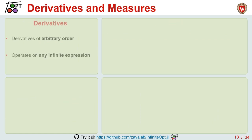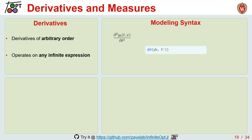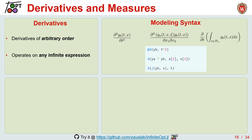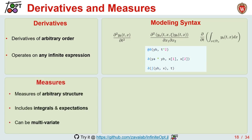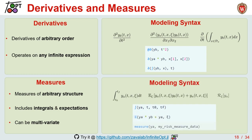For derivative operators, we support derivatives of arbitrary orders that can act on arbitrary infinite variables or expressions — for example, the second partial derivative of an infinite variable, or more complex partial derivative expressions, or even taking the derivative with respect to a measured function. For measure operators, we support measures of arbitrary structures and natively support integrals and expectations, even multivariate ones. We can use the integral function or expectation, and support arbitrary functions using our extendable measure API — for example, defining risk measures.